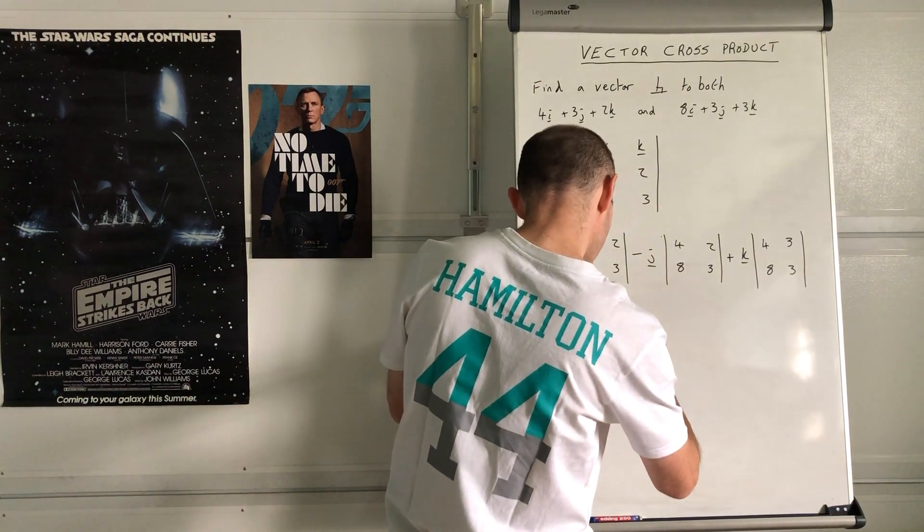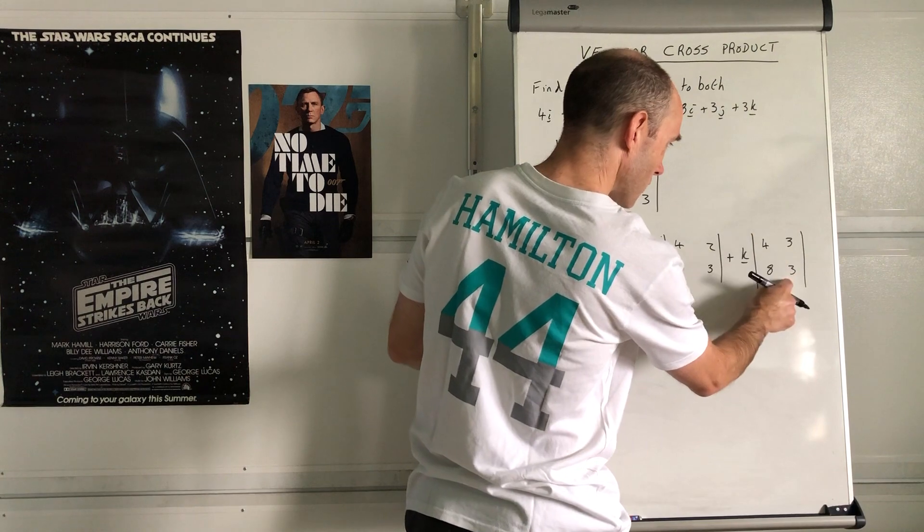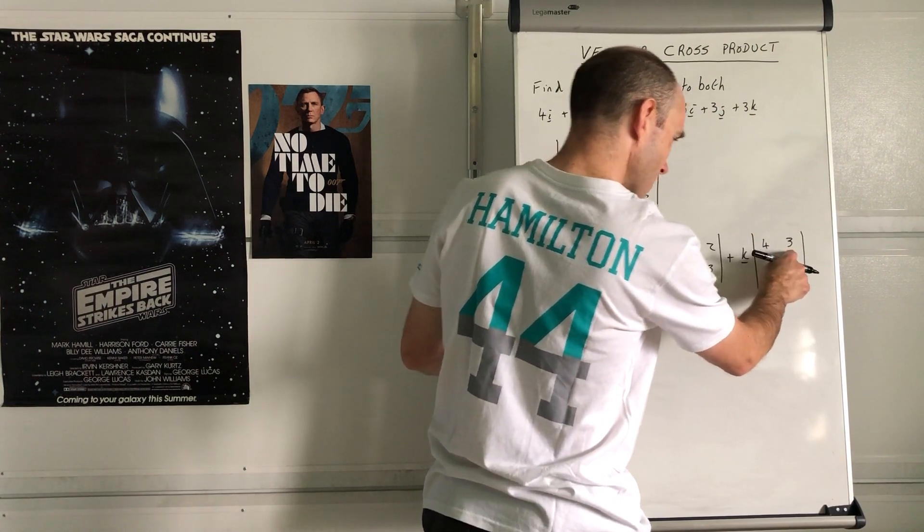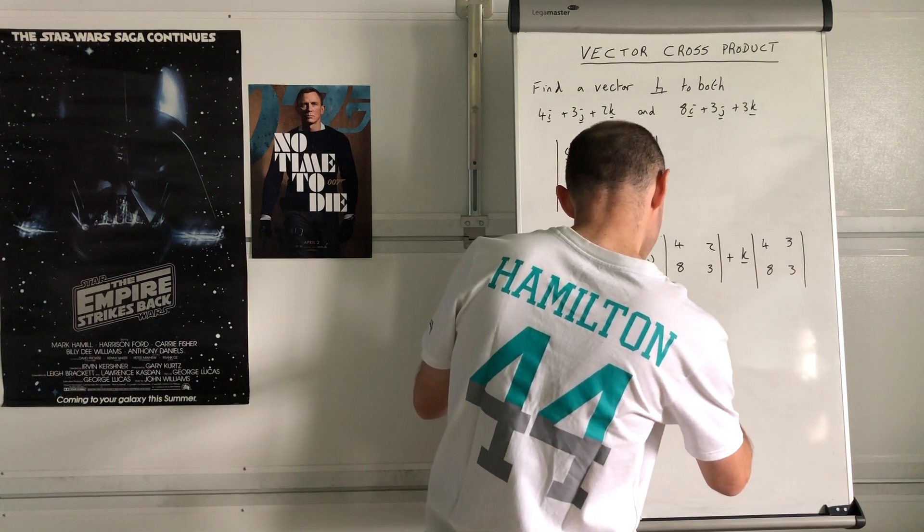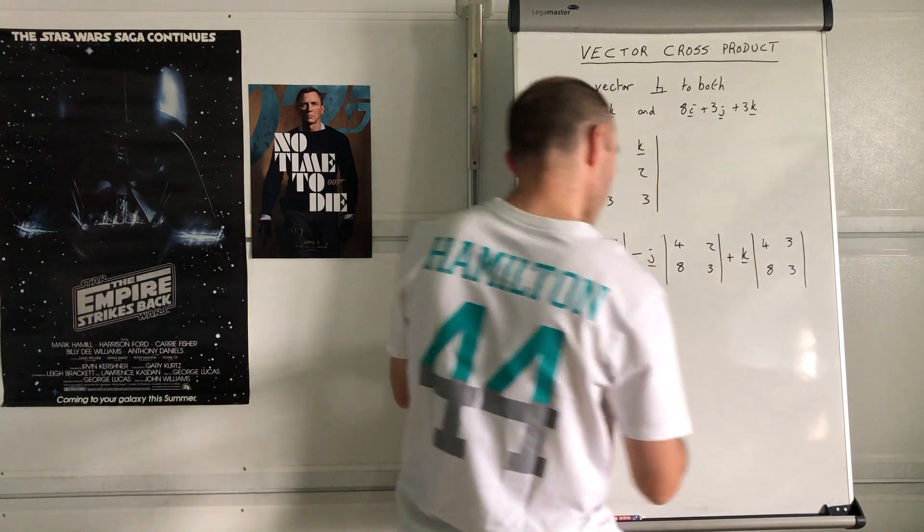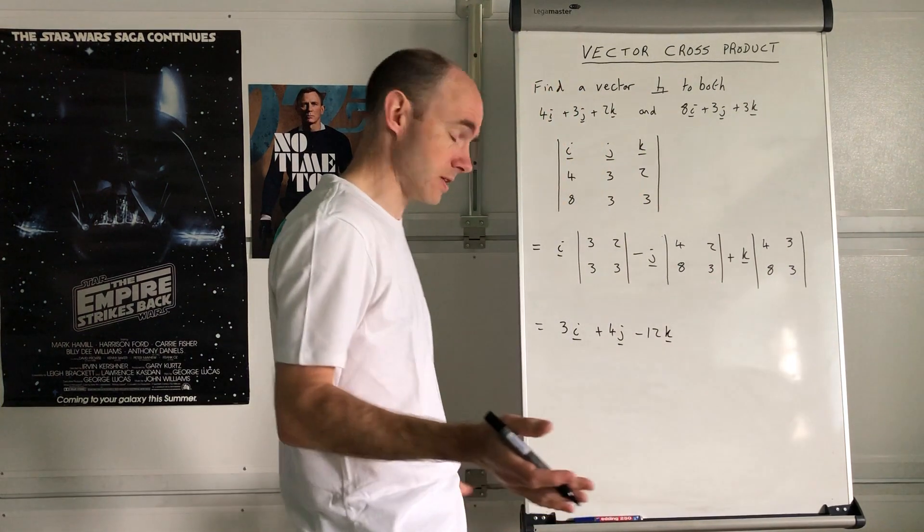Then you got 12 subtract 24 which is negative 12, negative 12k. That's it, that's your answer.